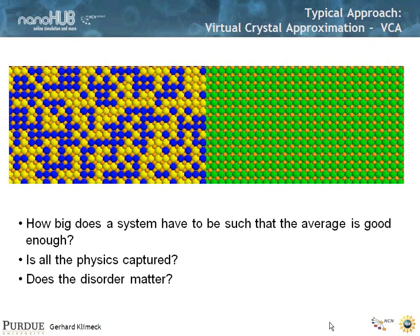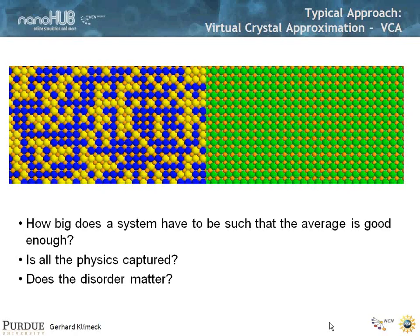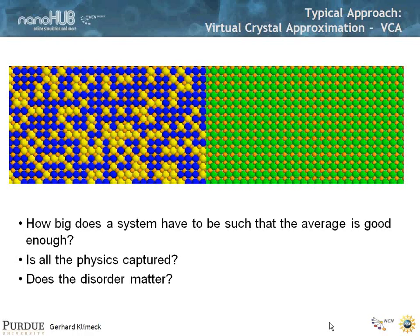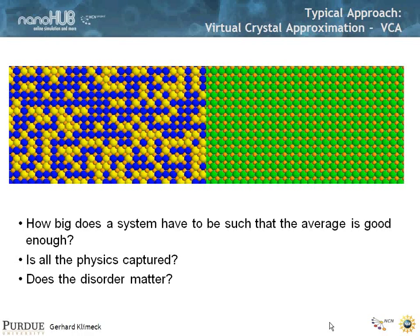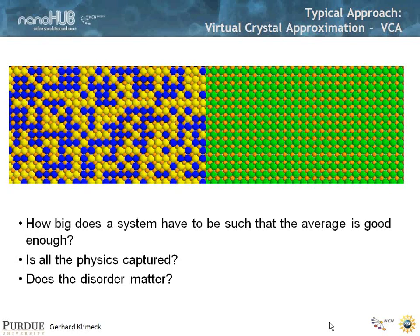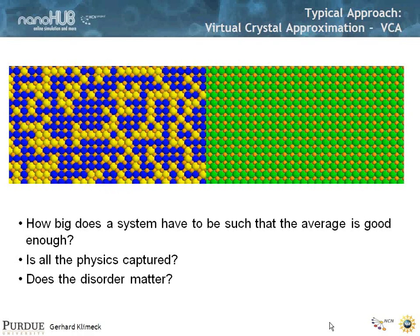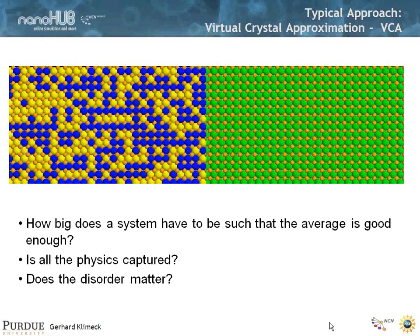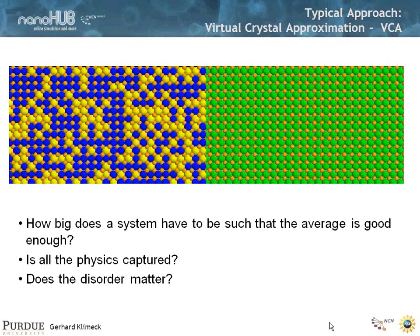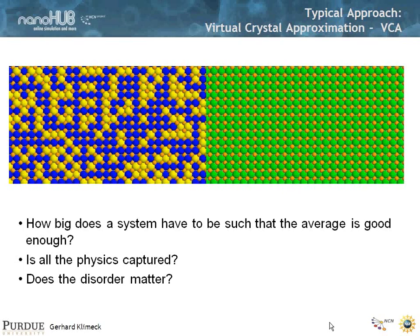We know how to compute things in a periodic structure. What I'm plotting here is an aluminum gallium arsenide random cell, showing different incarnations of the same aluminum concentration. As you see in this animation, they all look rather different — they are fluctuating, they are not ordered. So the question is: how big do you need to make such a disordered system that you no longer see the local order? And if you did that, is all the physics covered, and how does the disorder matter?